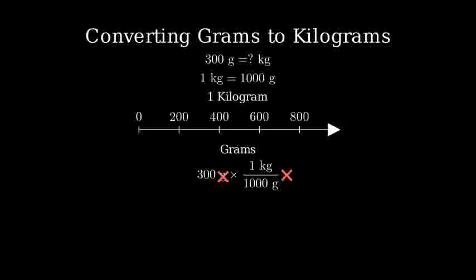This is the same as dividing 300 by 1,000. 300 divided by 1,000 equals 0.3. Therefore, 300 grams equals 0.3 kilograms.